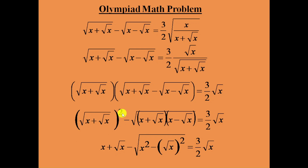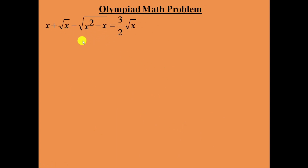In this part, this is square root and whole square, so we can cancel them. The remaining part is x plus square root of x, minus square root of x whole square. The right side remains the same. Now we can see that square root of x and whole square are there again — we can cancel these two as well.